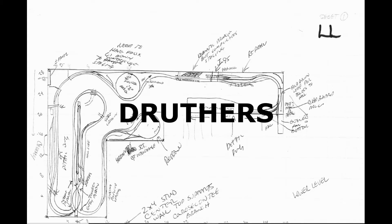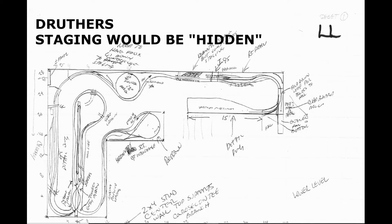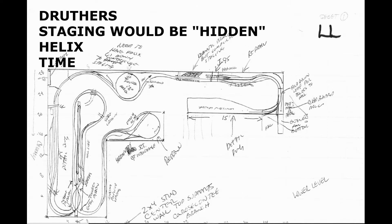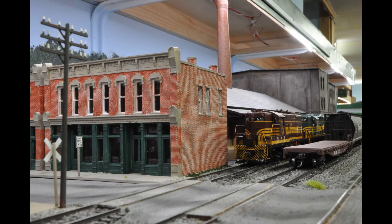Druthers: staging would have to be hidden, the layout would require a helix for double deck, and would I have time to finish the layout? In the end I think I got most of my givens, and I did manage to take the druthers and make them at least workable for what I wanted — we'll talk about that more as we go through the design.